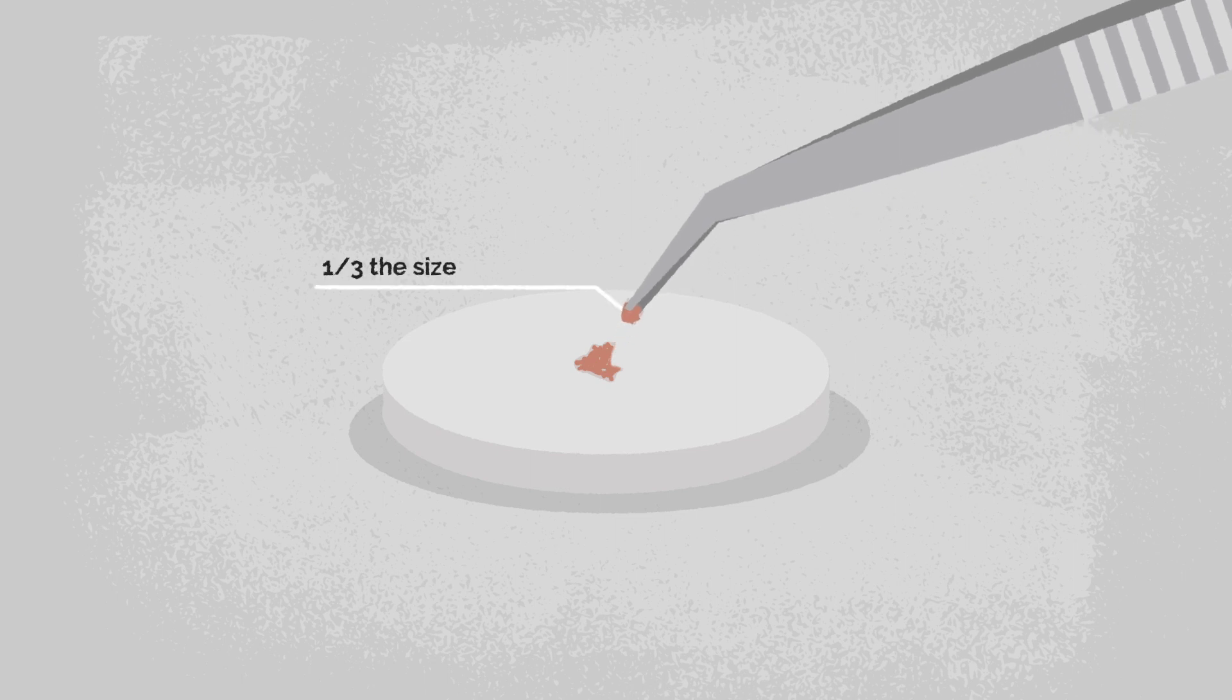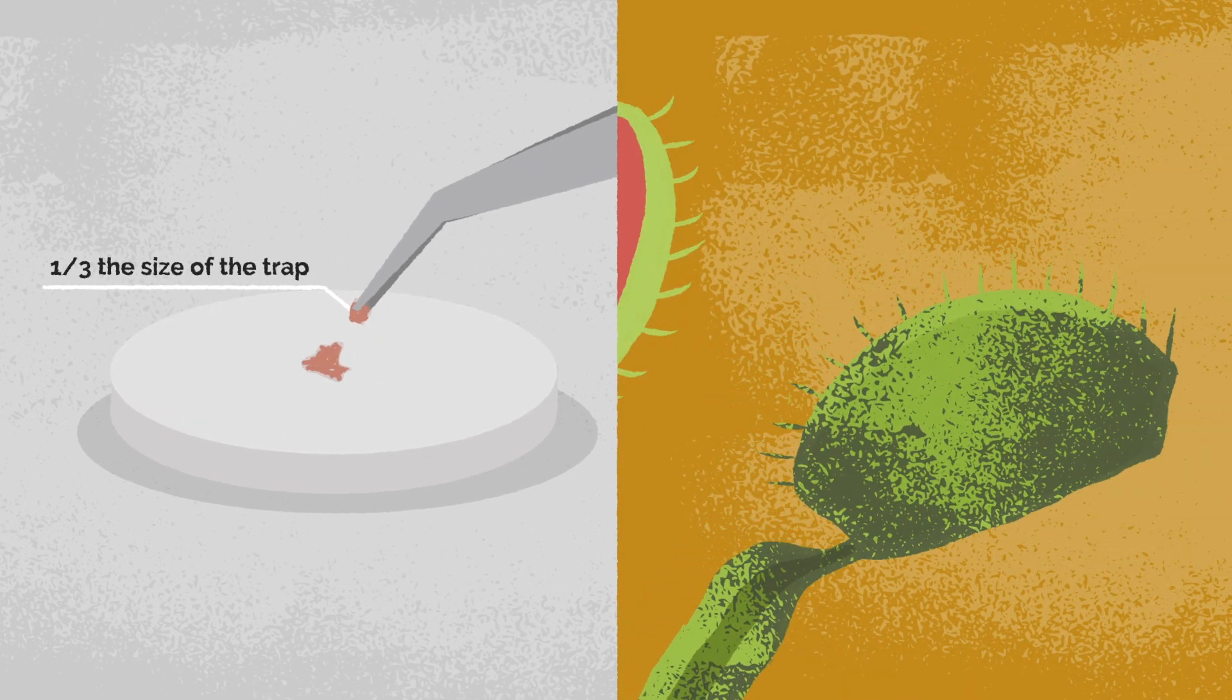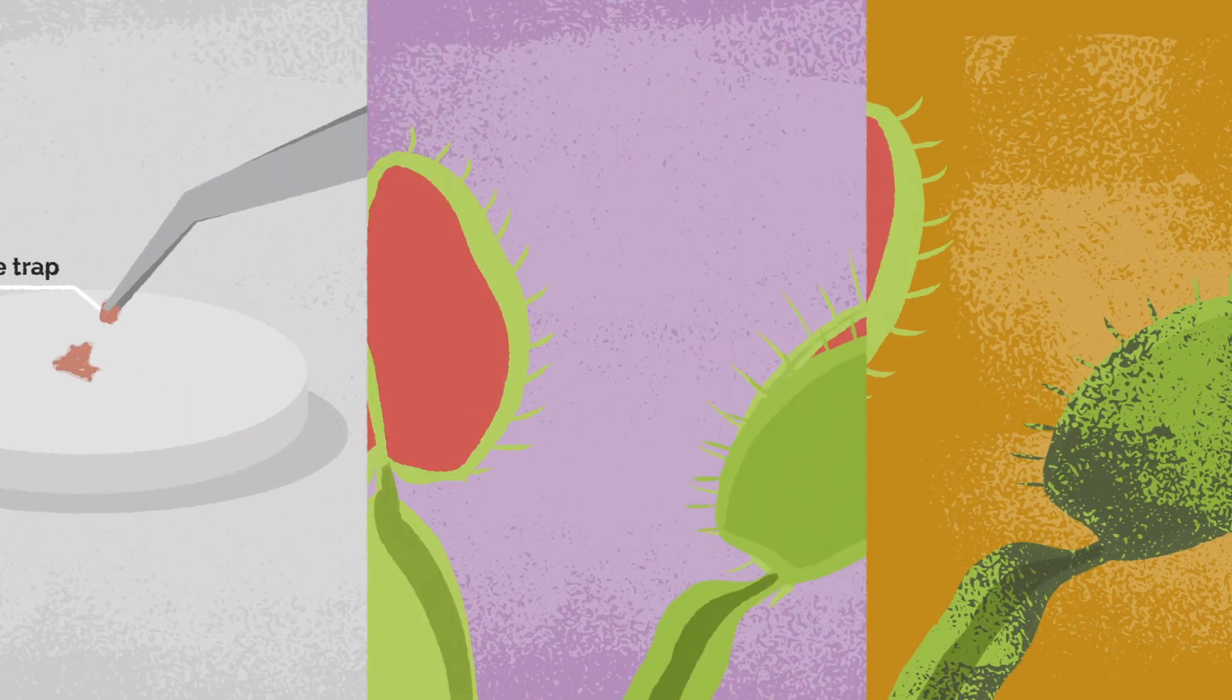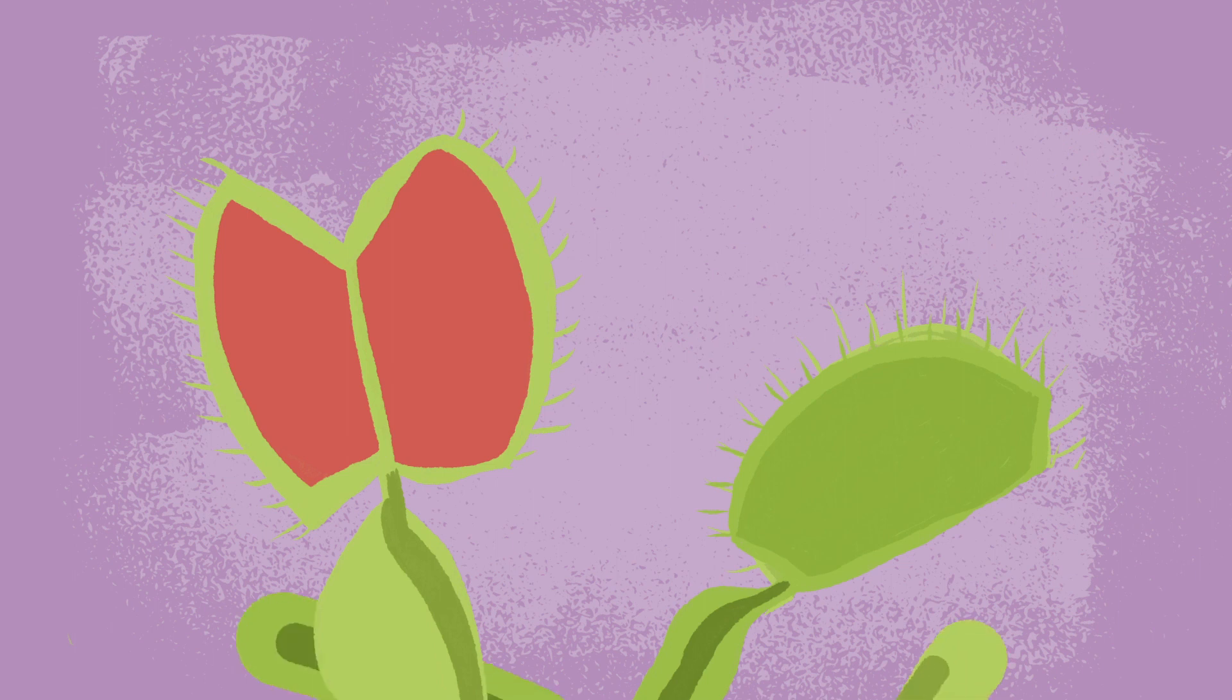The piece should be one-third the size of the trap. Too big of a piece will work, but the trap will die after the digestion. Traps can reopen three or four times. Choose one trap and feed it repeatedly. This will result in a better looking plant.